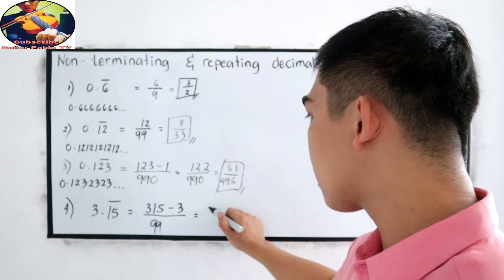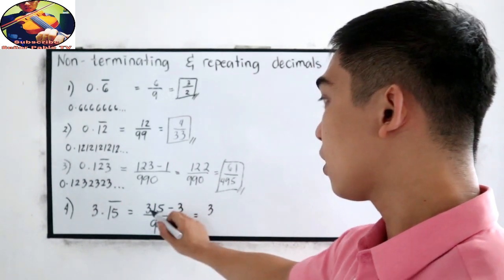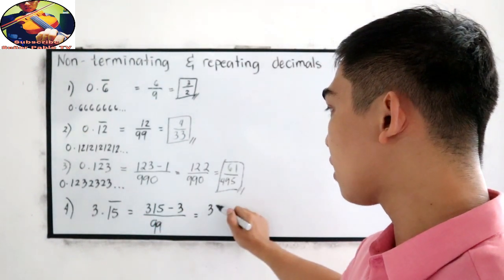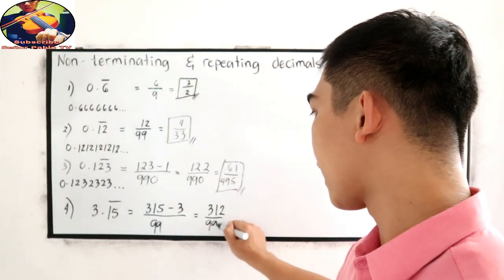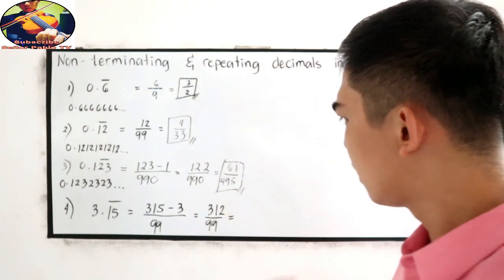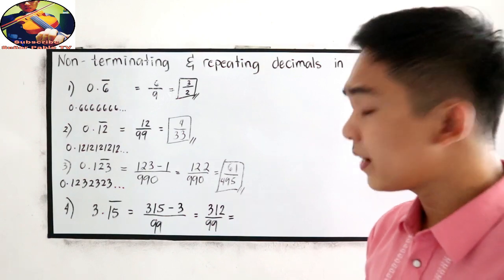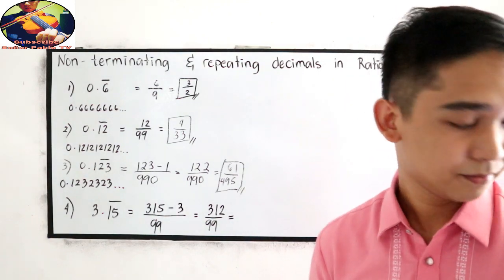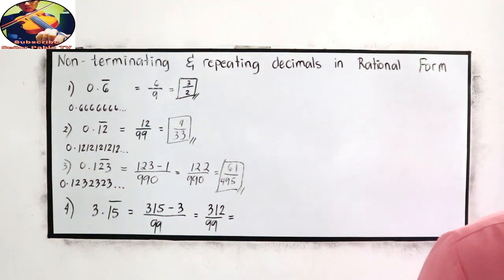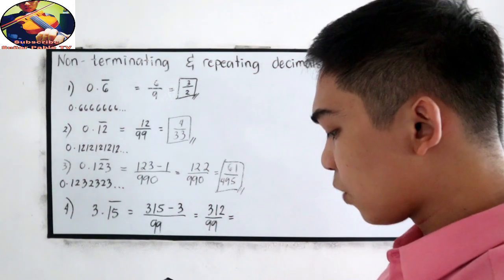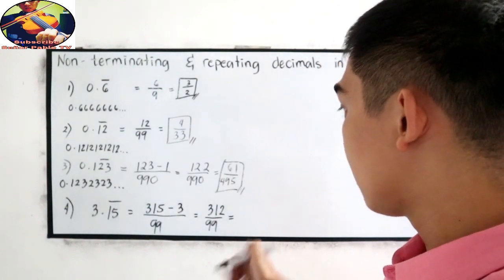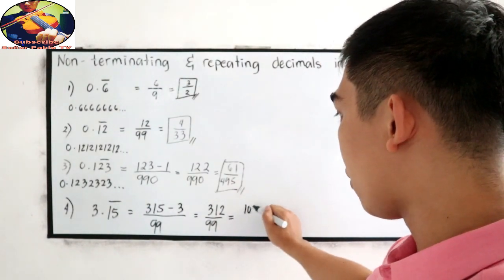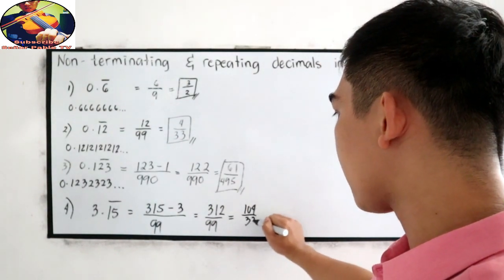315 minus 3 equals 312, so we have 312 over 99. This is divisible by 3: 312 divided by 3 is 104, and 99 divided by 3 is 33. So the answer is 104 over 33.